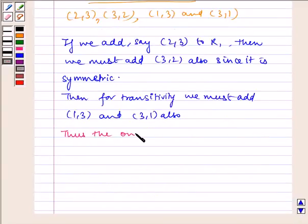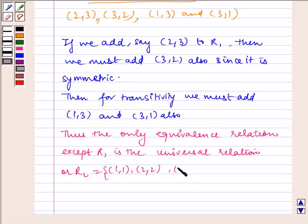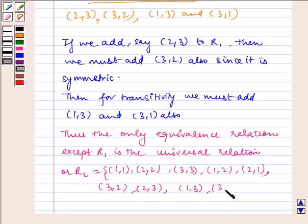Thus the only equivalence relation except R1 is the universal relation R2, which equals {(1,1), (2,2), (3,3), (1,2), (2,1), (3,2), (2,3), (1,3), (3,1)}.